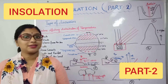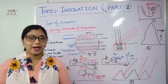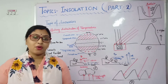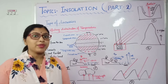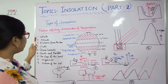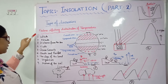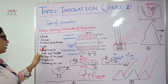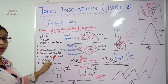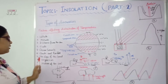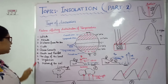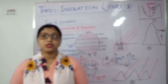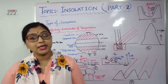Today I will discuss the second part of the insolation chapter: factors affecting distribution of temperature. Hope you have seen the first part of the video. Here is what we will get to know today — the factors I have written: latitude, altitude, distance from the sea, winds, ocean currents, clouds and rainfall, the slope of the land, vegetation, and nature of the soil. How these factors basically affect the distribution of temperature on this earth is what we will get to know today.